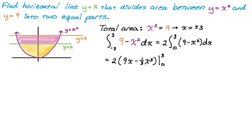I'm going to plug in 3 and plug in 0. So it's 2, the quantity, that's 27 minus 9, because 3 cubed is 27 divided by 3 is 9, and then when you plug in 0, you just get 0. So we get 27 minus 9 is 18 times 2, so 36. That's the entire area.